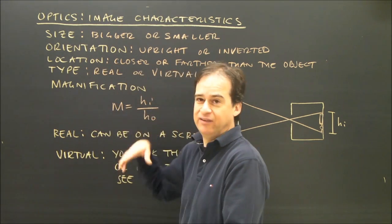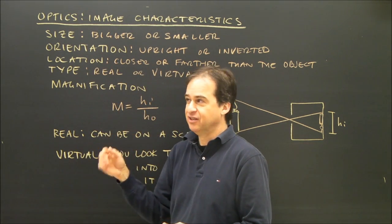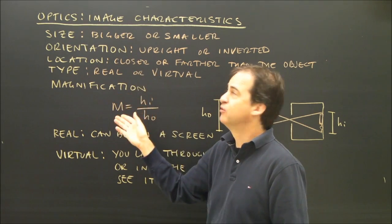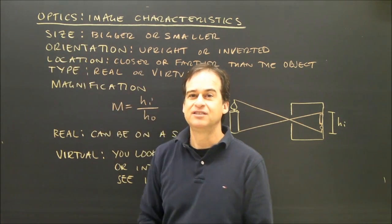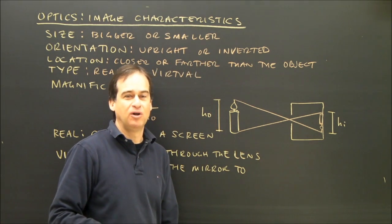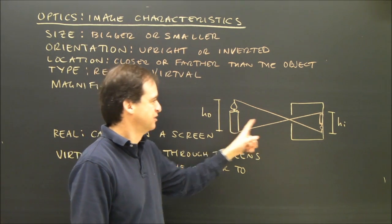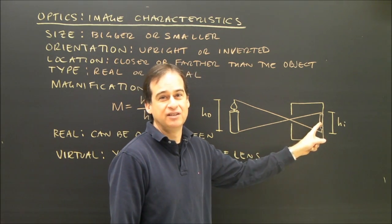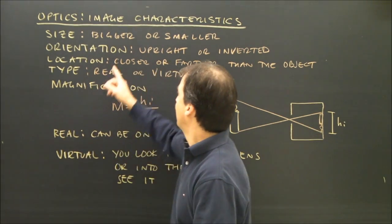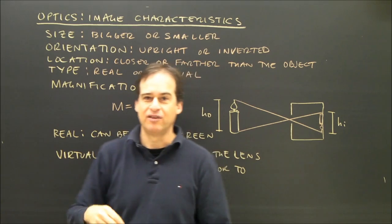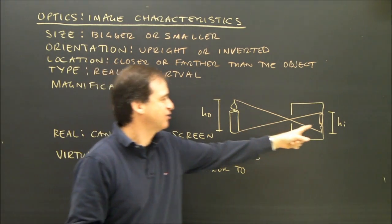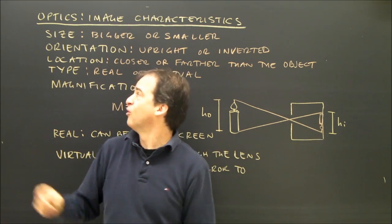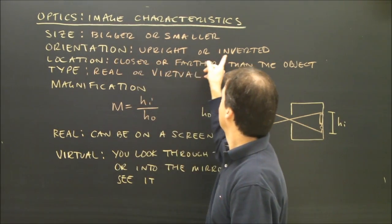So the important things to note are, and this depends on how your school does it, you may use all of these or only a few of these, but the characteristics usually are size. Is the image bigger or smaller than the original? Here's the object, here's the image, the image in this case is smaller. The orientation, that means is it the same orientation as the original? In this case the candle is upside down. So our choices are upright or inverted.